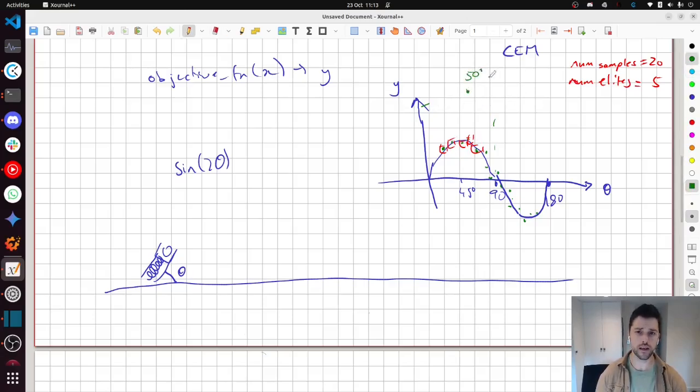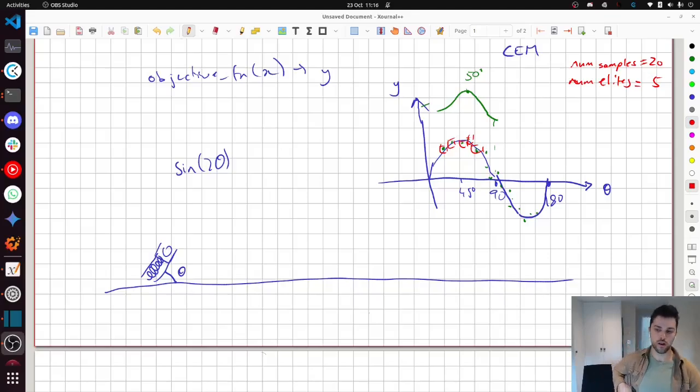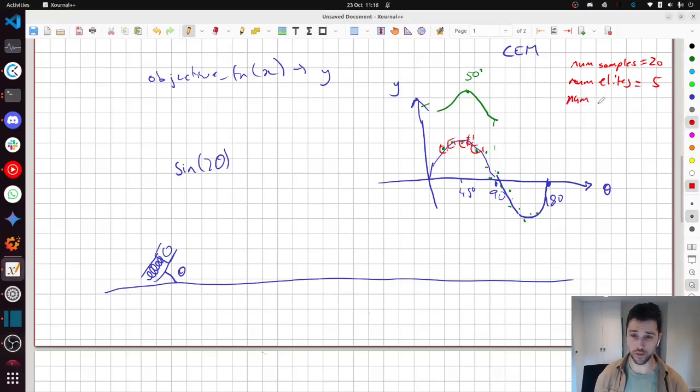And we're going to use these to recompute or compute the parameters of a new Gaussian distribution. So we'll take the average of all these. And in fact, the minor detail is it's a weighted average weighted by the Y of all of these. And that will be our new guess for where the correct answer is. And maybe say this is 50 degrees. And then we'll take the standard deviation also in a weighted manner. And that should give you a narrow Gaussian distribution as well.